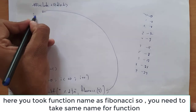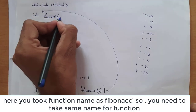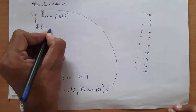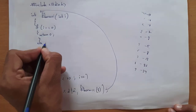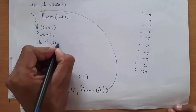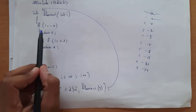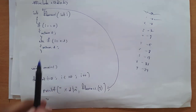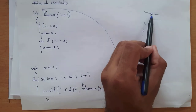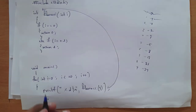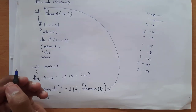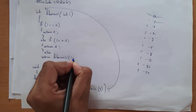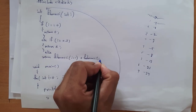Now I write the function: int fibonacci(int i). Inside this write: if i == 0, return 0; else if i == 1, return 1. The first two numbers of the Fibonacci series are 0 and 1, so I return both those values. After that, else return fibonacci(i-1) + fibonacci(i-2). That is the formula.